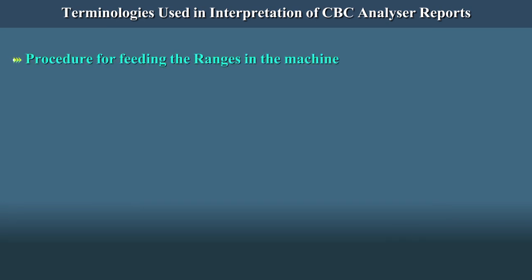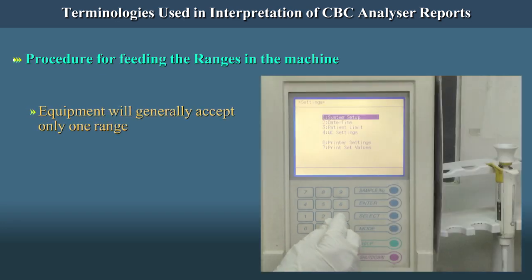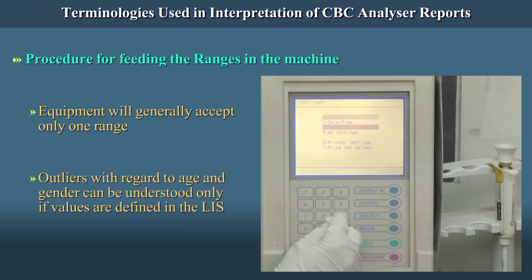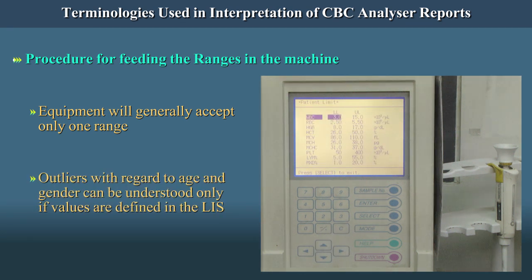Procedure for Feeding the Ranges in the Machine. The equipment will generally accept only one range. So outliers with regard to age and gender can be understood only if the values are defined in the LIS.